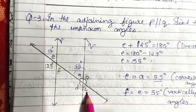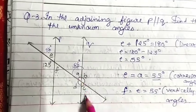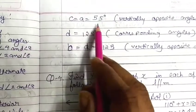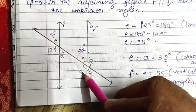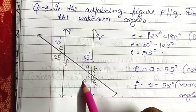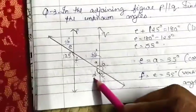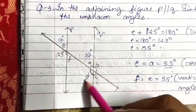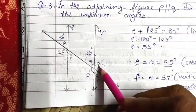Now that we have A, we can find C. A equals C equals 55 degrees because they are vertically opposite to each other. To find D: 125 equals D because they are corresponding angles going in the same direction — F-like structure. So D equals 125 degrees. Then B equals D equals 125 degrees because they are vertically opposite to each other.